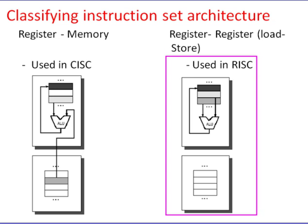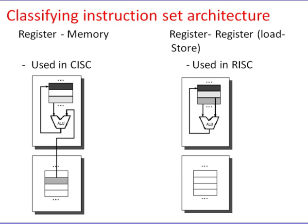In load-store architecture, the only operations that interact with memory are load and store. To load a value from memory, you copy data from memory into a register. To store a value, you copy data from a register to memory. CISC ISAs often have other kinds of instructions that interact with memory — for example, an instruction that adds register contents to memory contents and stores the result. These kinds of instructions do not appear in most RISC ISAs.